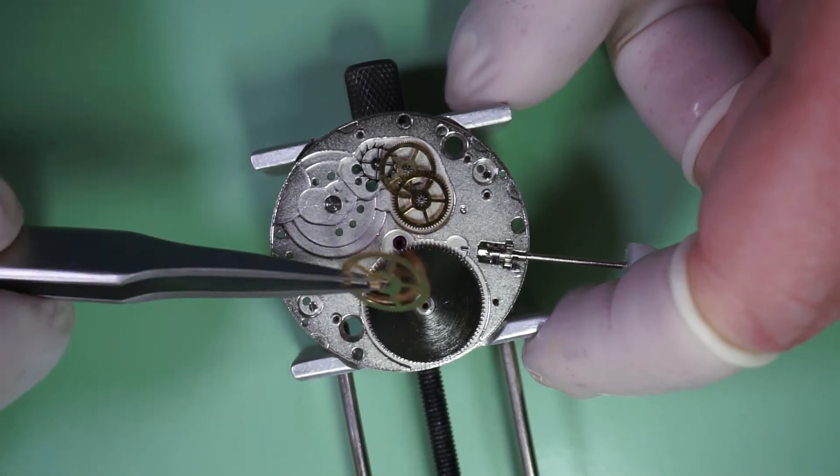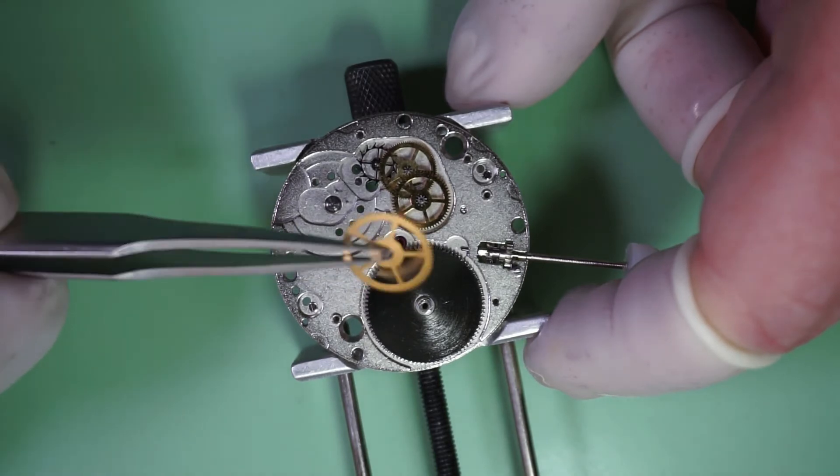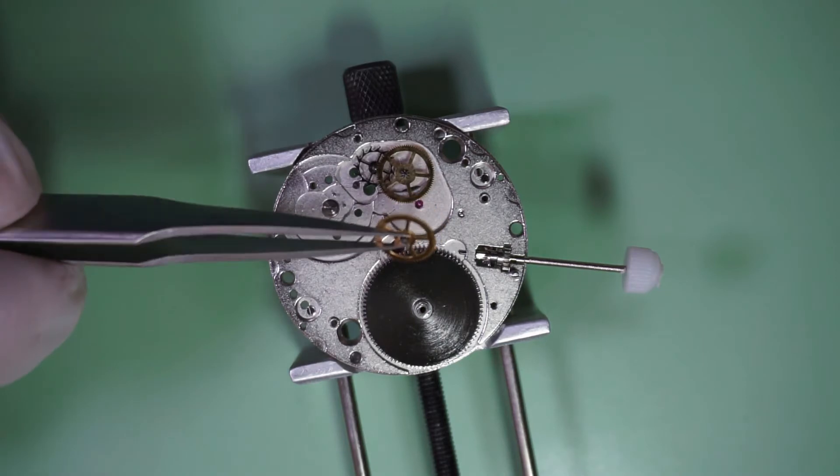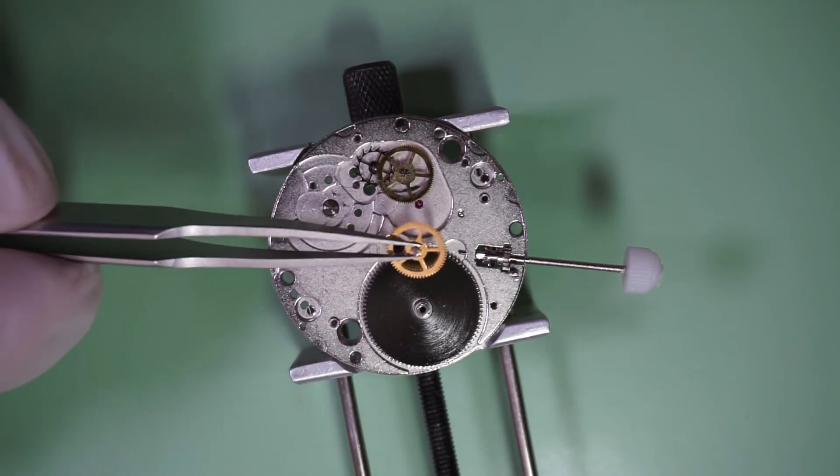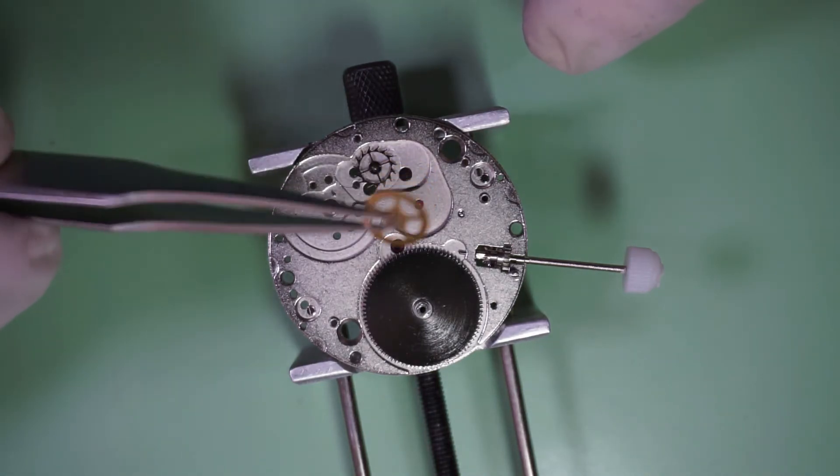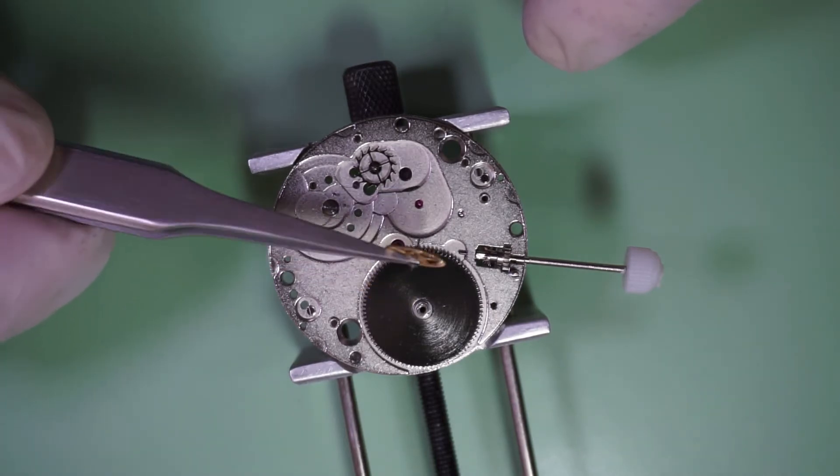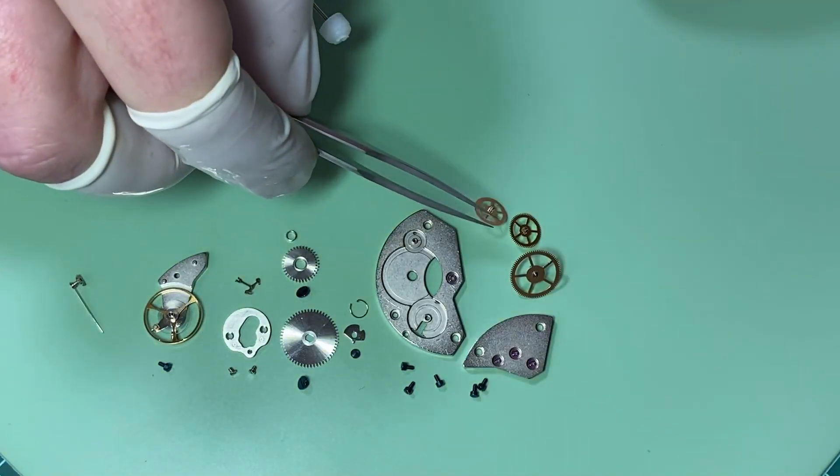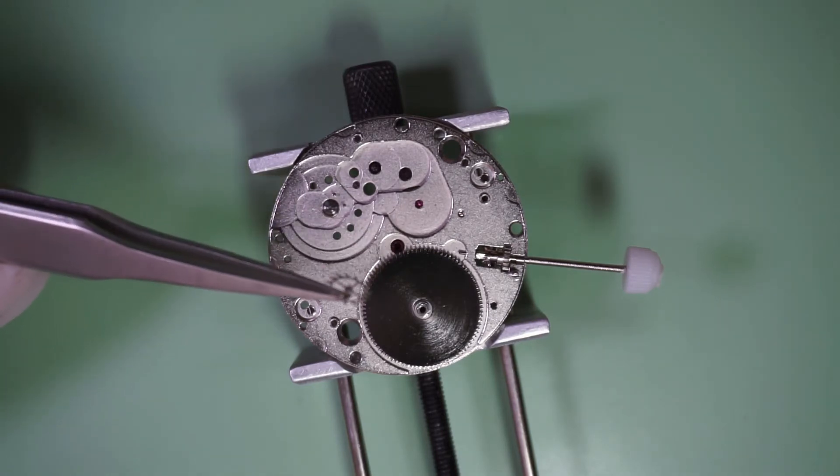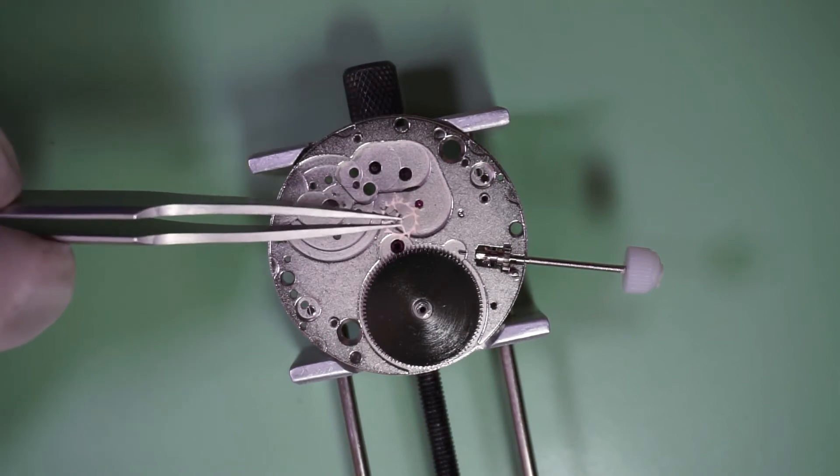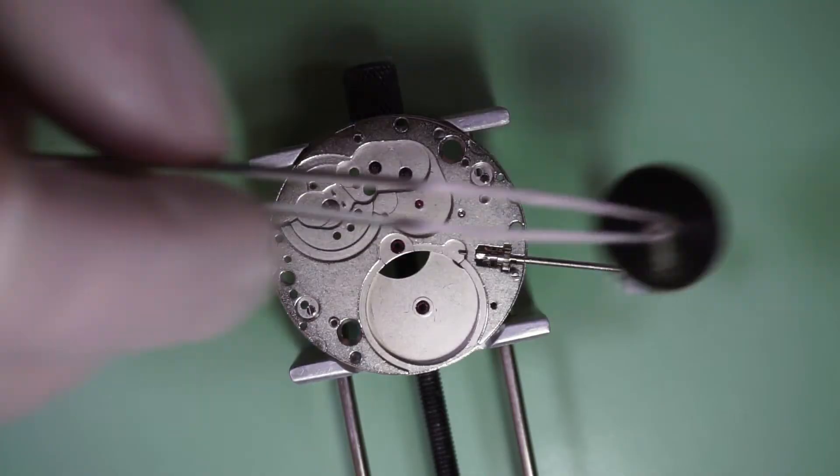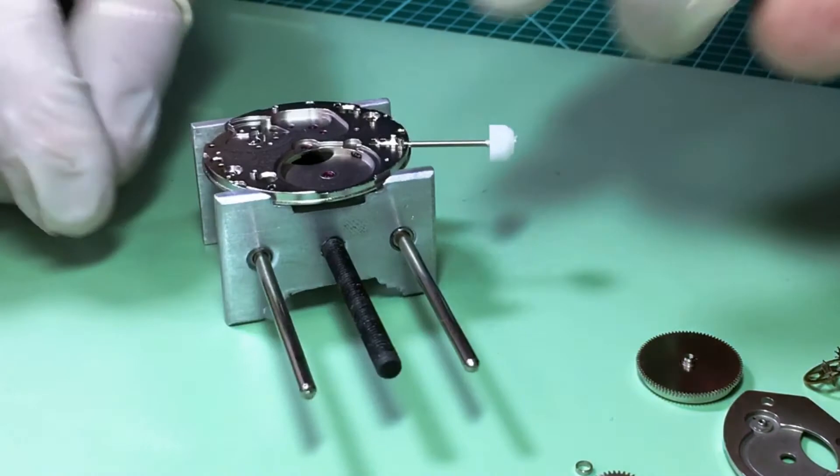Firstly, I'll remove the center wheel. And you can see that long pivot. That is what sticks through the base plate and you attach your minute hand to. This is the third wheel. And next is the fourth wheel, which is also incidentally called the seconds wheel. Seconds wheel, because that long pivot that you see there, that's what the seconds hand or second hand is attached to. And next is the escape wheel. And that was part of the escapement with the pallet fork and the balance wheel. And we also remove the barrel, which contains the mainspring or the power source for the watch.